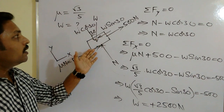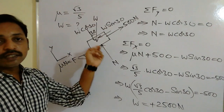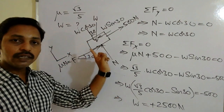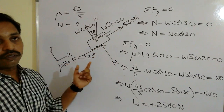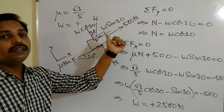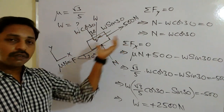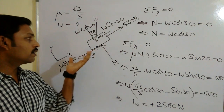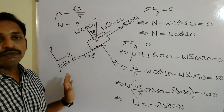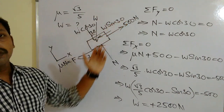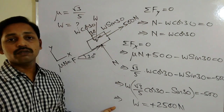To summarize: I drew the free body diagram by removing all surface contacts and drawing the block separately. I represented the weight, the 500 Newton applied force, the normal reaction perpendicular to the surface, and the frictional force opposing the tendency to slide down. Using the two equilibrium equations ΣFy = 0 and ΣFx = 0 and solving, we obtained the weight of the block as 2500 Newtons.